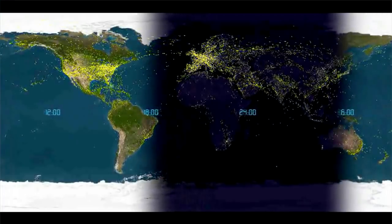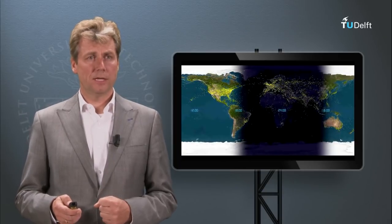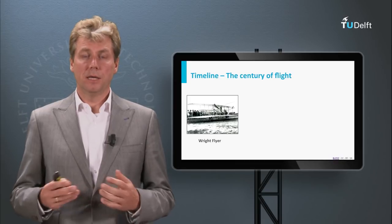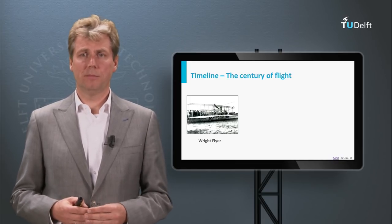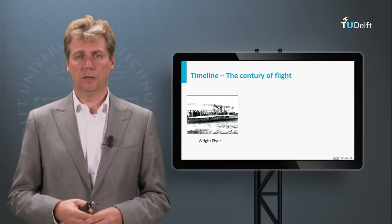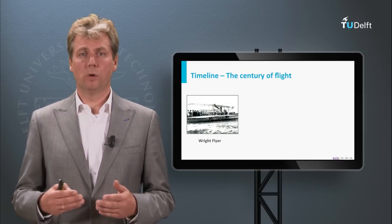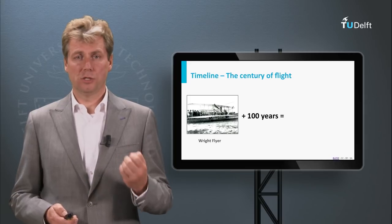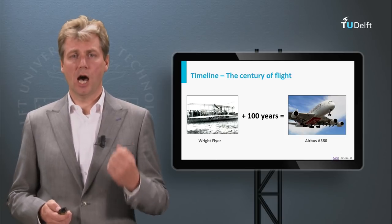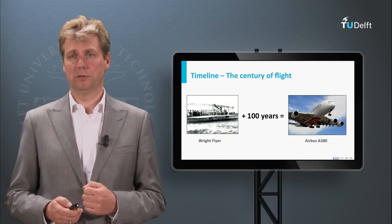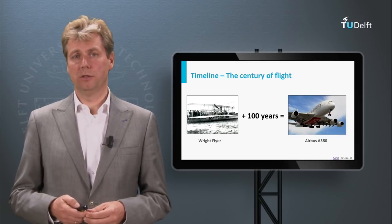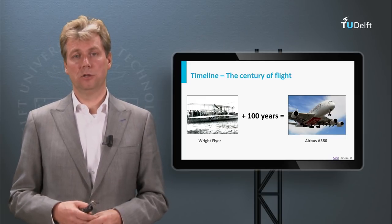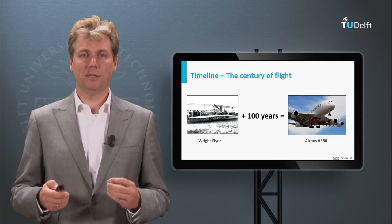So how did this all start? These thousands of aircraft that are currently in the air - how did it all start? The 20th century is often called the century of flight. In the beginning of the century there were many pioneers, and the first aircraft that carried a human in the air propelled by an engine, the Wright Flyer, kicked it all off. It is unbelievable that only 100 years later we were already able to transport hundreds of passengers to the other side of the globe.